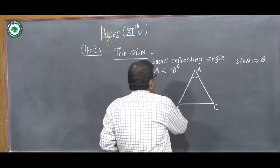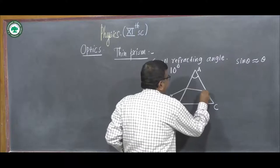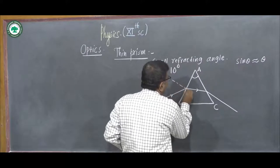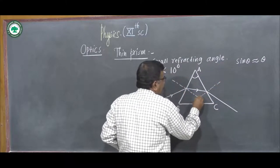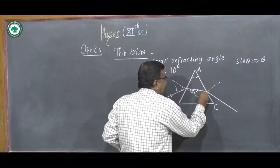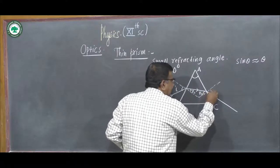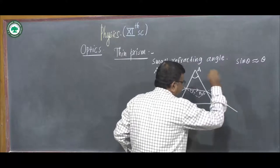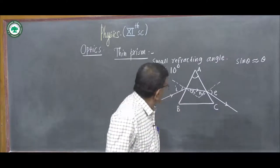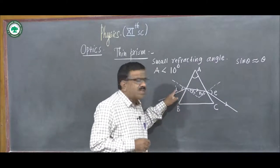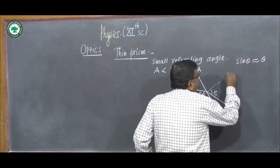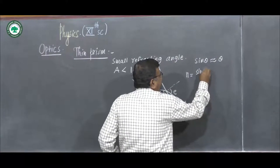We also know for the prism — suppose this is the incident ray, refracted ray, and this is the emergent ray. These are the normals at the two faces. This is the angle of incidence, angle of refraction at the first face, angle of refraction at the second face, and this is the angle of emergence. For the first face, i is the angle of incidence and r1 is the angle of refraction; we write the refractive index as sin i upon sin r1.